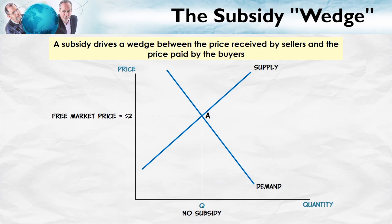We have a lot to cover in this diagram, so put on your thinking hats. We begin, as usual, at the free market equilibrium — let's say that's at a price of $2. A subsidy drives a wedge between the price received by sellers and the price paid by buyers. The only difference from the tax is that the price received by sellers with the subsidy is going to be more than the price paid by the buyers.